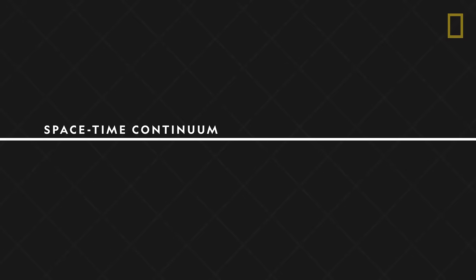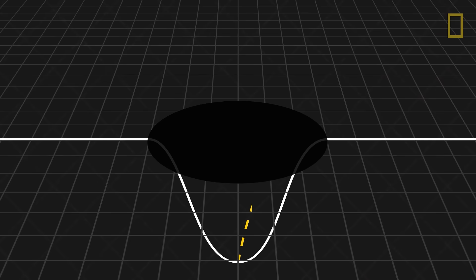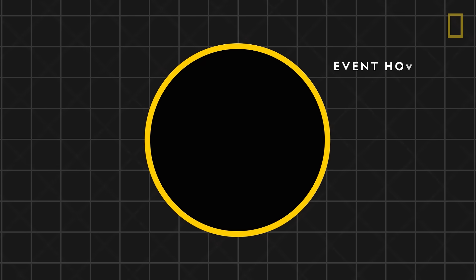A black hole is a region in space where the force of gravity is so strong, not even light, the fastest known entity in our universe can escape. The boundary of a black hole is called the event horizon, a point of no return beyond which we truly cannot see.